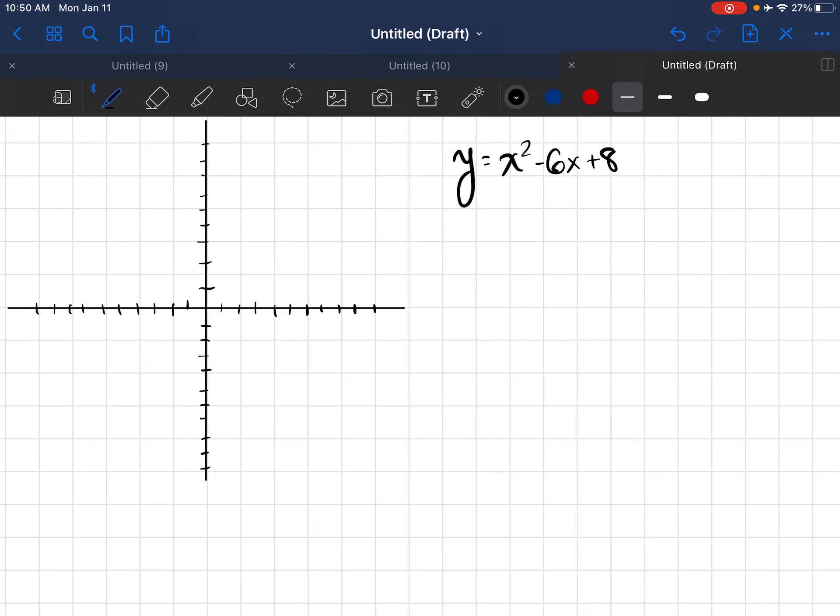So the first thing that I want to do is find the x-intercepts. I want to solve this function. I know that I need to factor it. So when I factor it, I'm going to get x minus 2 and x minus 4. That is a 4 here as my factors.